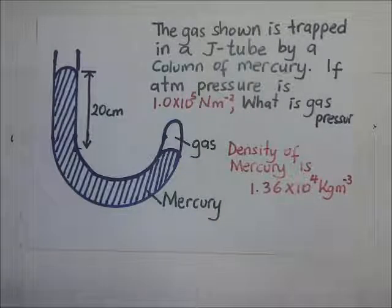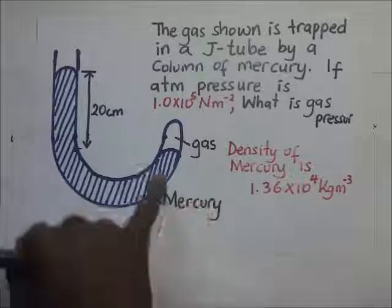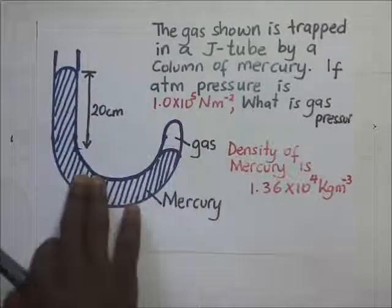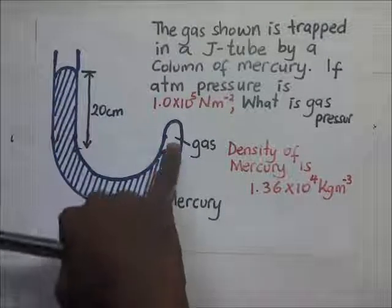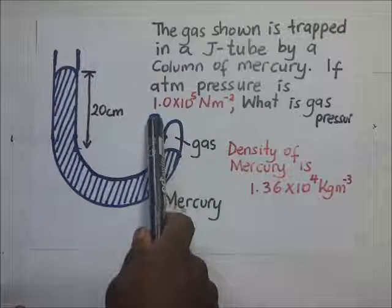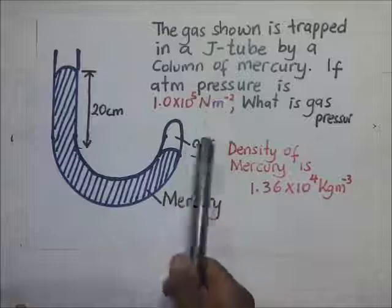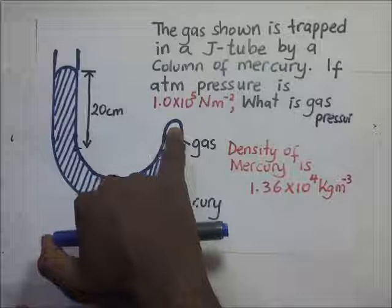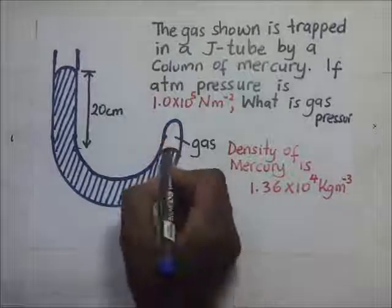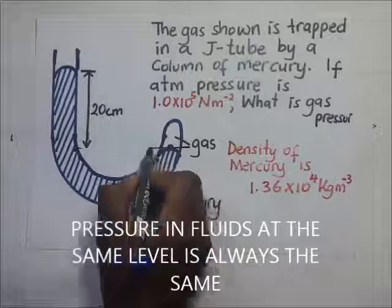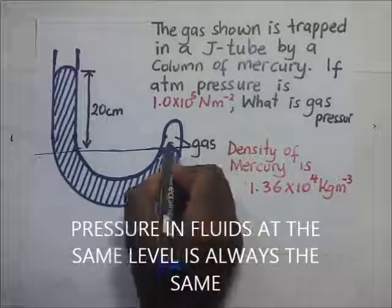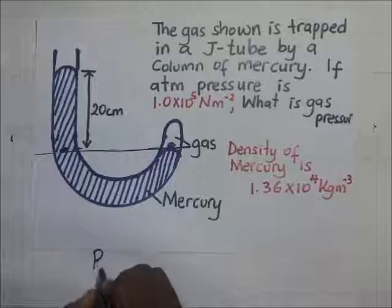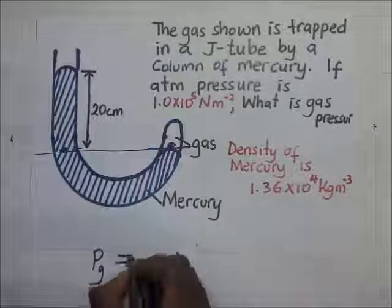In this next problem, we are required to find the gas pressure. We have a gas trapped in a J-tube, trapped by a column of mercury. We are told the atmospheric pressure is 1.0 times 10 to the power 5 N/m². The trapped gas is exerting pressure at a certain point, and at that level the pressure of the gas equals the pressure at the corresponding point on the open side.